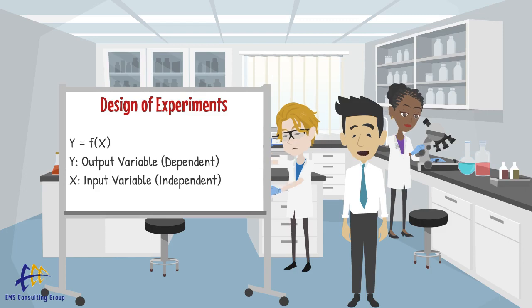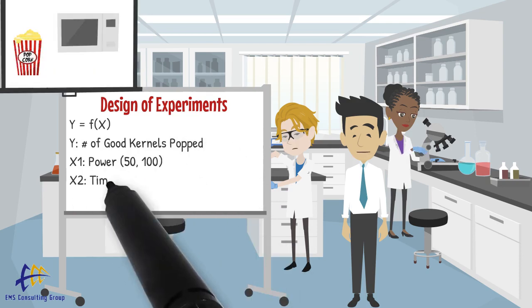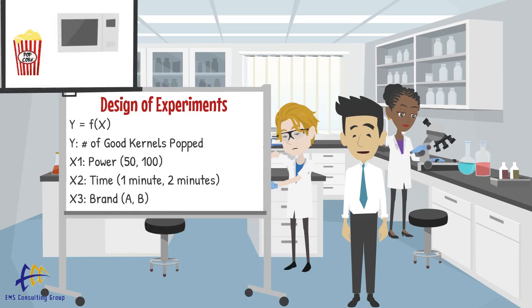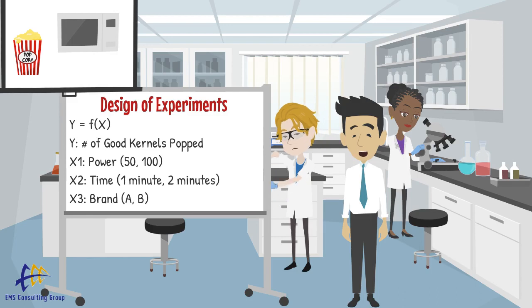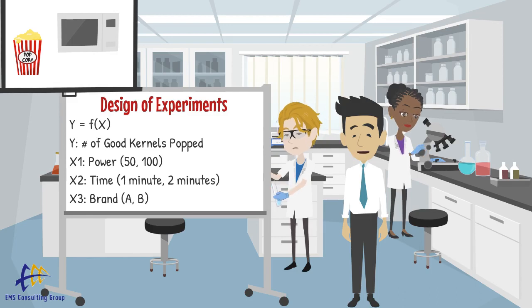Let's consider a very simple example. Suppose we are working with microwave popcorn and our goal is to improve the number of good kernels popped — that would be our y variable. X variables might include power on the microwave, time in the microwave, and perhaps brand of popcorn.